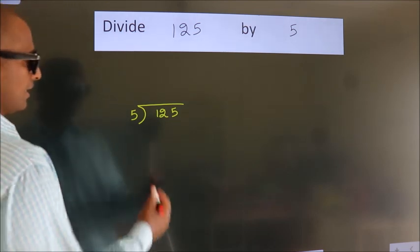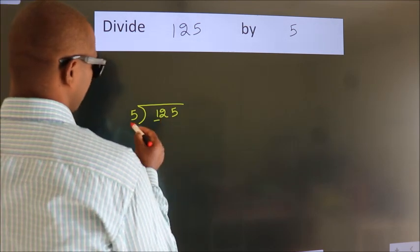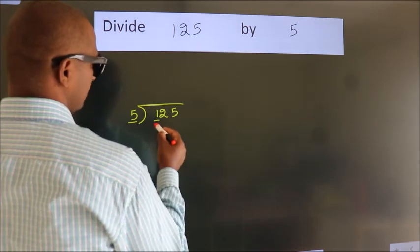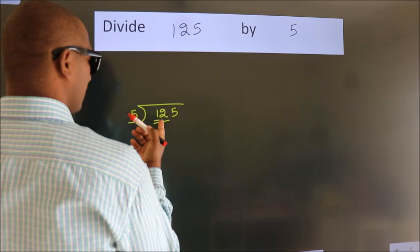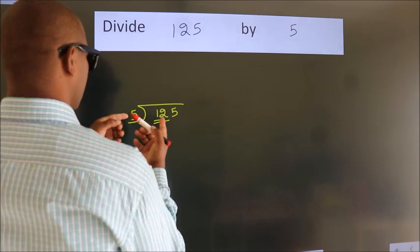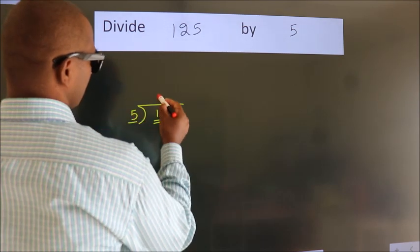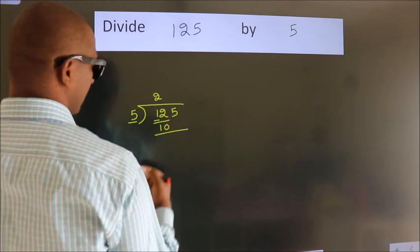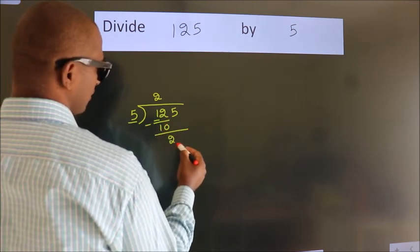Next. Here we have 1, here 5. 1 smaller than 5. So we should take 2 numbers, 12. A number close to 12 in 5 table is 5 2s, 10. Now we should subtract. We get 2.